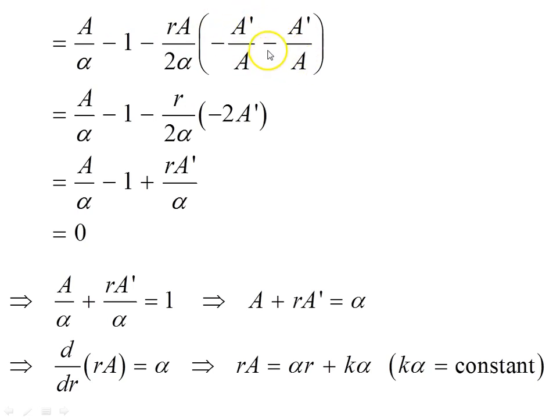Now here, we can add those two terms. So we get -2A', because that A cancels with each of those. And we're left with this. We have two negatives here become a plus, and expand out, and the twos cancel out here. So we get +rA'/α - 1 here, and A/α.